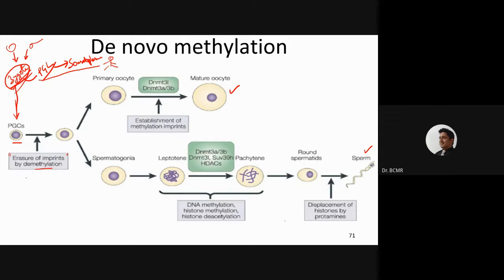During gametogenesis there is erasure, and eventually more things happen within the sperm or oocyte. In the DNA of a prospective sperm, all the DNA is methylated; histone methylation occurs, deacetylation occurs, and all histones are eventually replaced by protamines. So the methylated DNA is wound around protamines in the sperm head. Whereas in the oocyte there is a delay — methylation imprints will occur, but the mature oocyte and completion of meiosis will only happen after fertilization. Those are some of the differences.